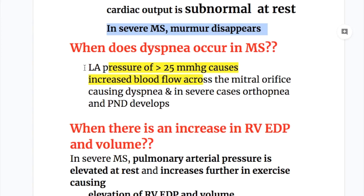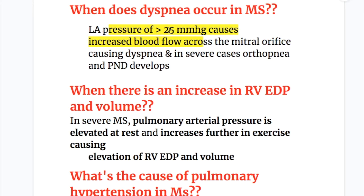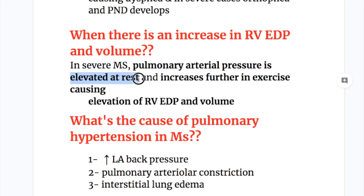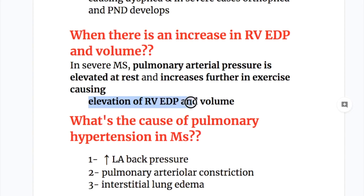When does dyspnea occur in MS? A left atrial pressure of more than 25 mmHg causes increased blood flow across the mitral orifice, causing dyspnea. In severe cases, orthopnea and paroxysmal nocturnal dyspnea occur when there is an increase in right ventricular end-diastolic pressure and volume. In severe MS, pulmonary arterial pressure is elevated at rest and increases further with exercise.